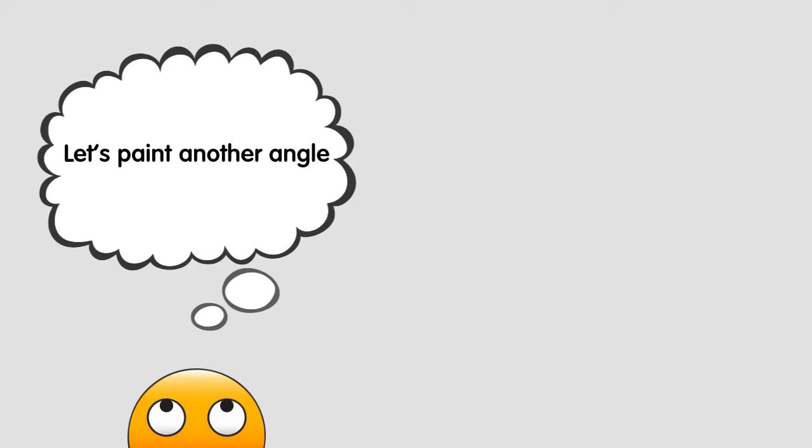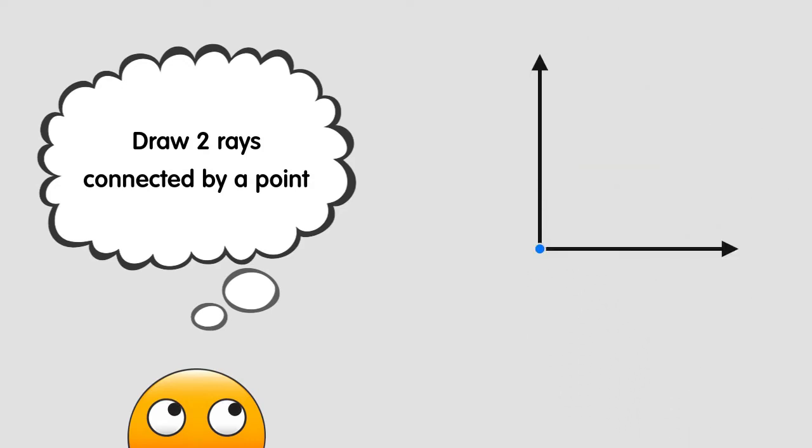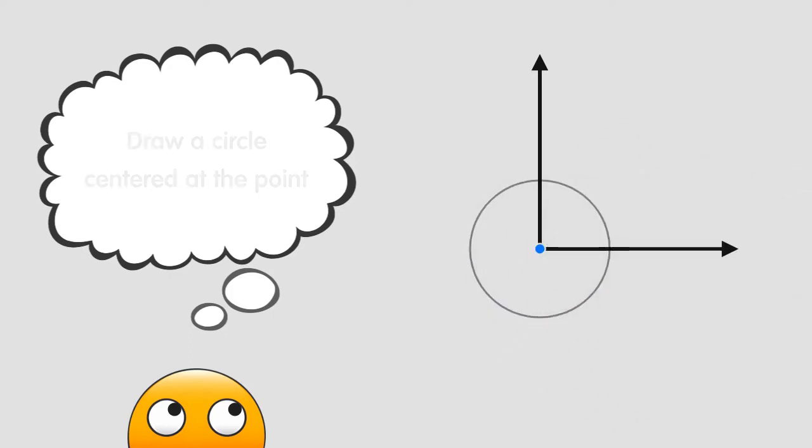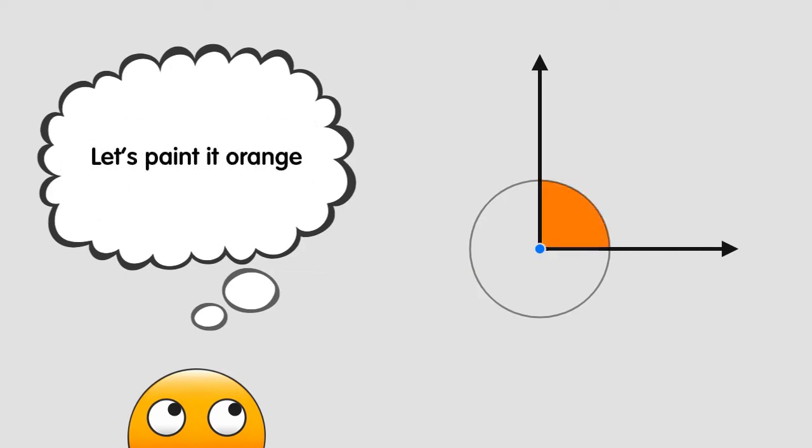Let's paint another angle. Draw two rays connected by a point. Draw a circle centered at the point. The angle is the space between the two connected rays inside the circle. Let's paint this angle orange.